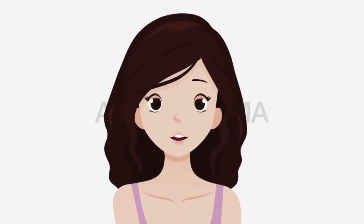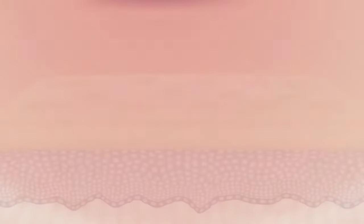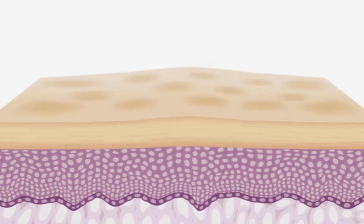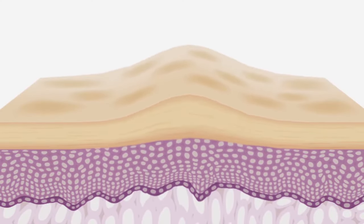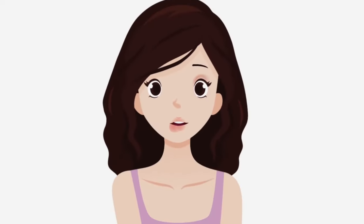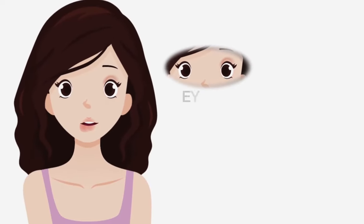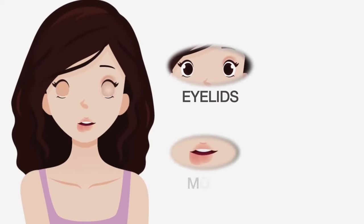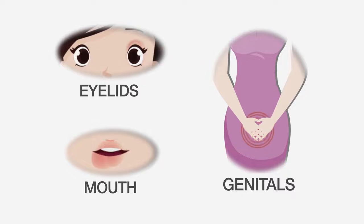Angioedema is swelling in the deep layers of the skin and many times occurs in soft tissues such as the eyelids, mouth or genitals. It is often seen together with hives.